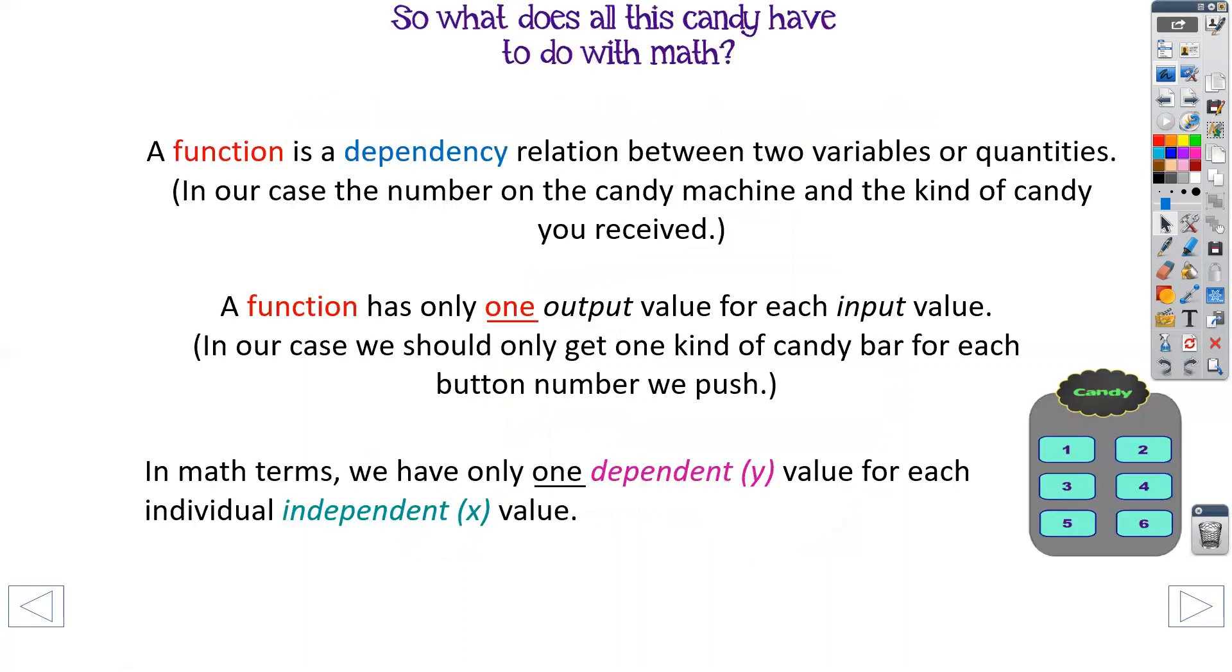So a function is a dependency relation between two variables or quantities. So in this case, if I pressed one, I only got one result. So a function only has one output for each value you input. So again, whatever number I pressed, I only got one type of candy back. We have one dependent value, which is your Y, and one independent value, which is your X. This should relate back even to sixth grade for independent and dependent.